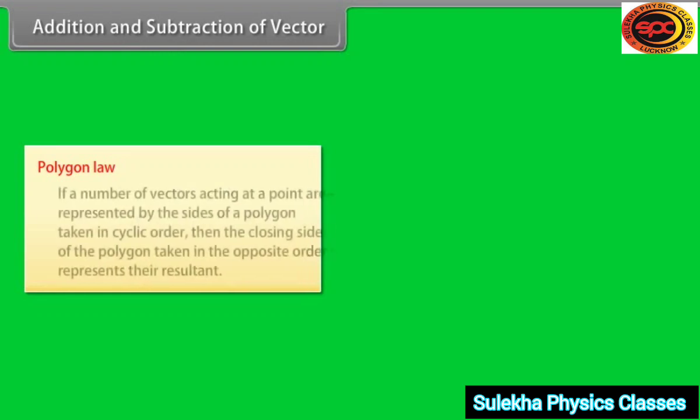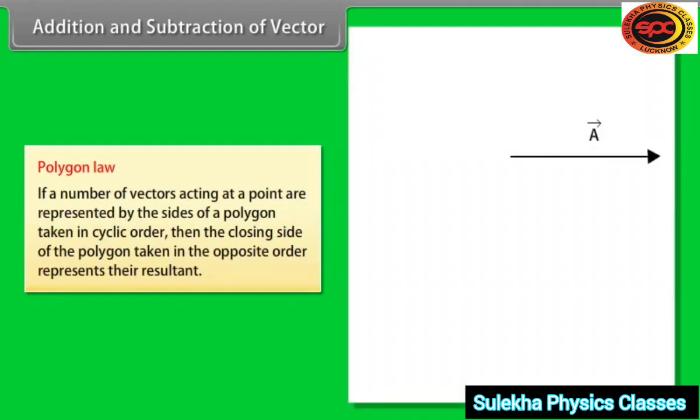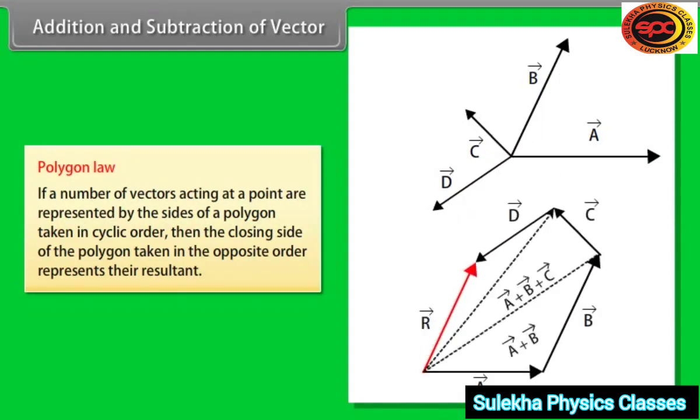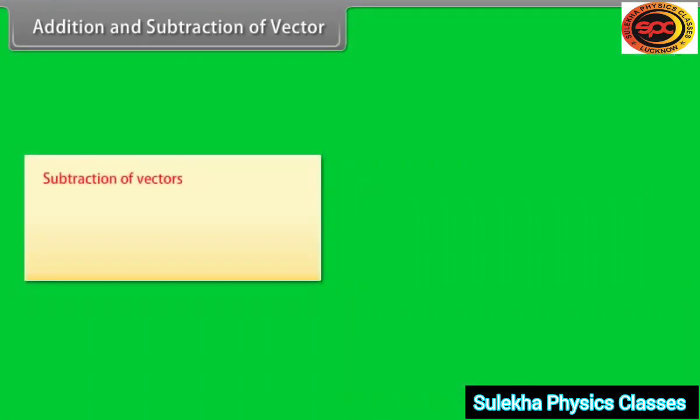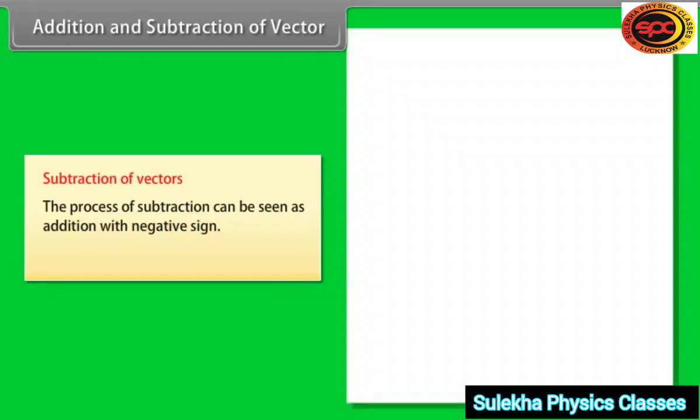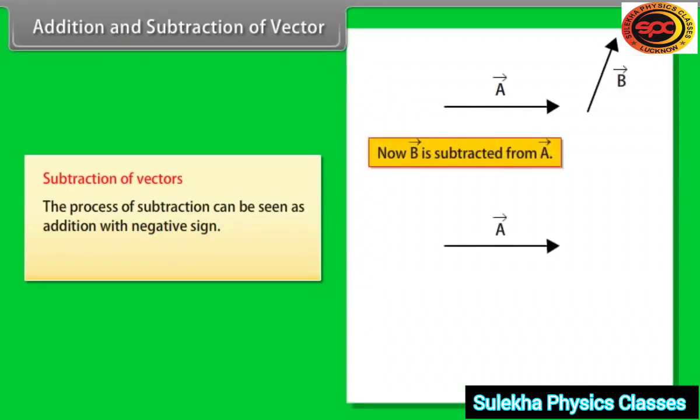C. Polygon law: if a number of vectors acting at a point are represented by the sides of a polygon taken in cyclic order, then the closing side of the polygon taken in the opposite order represents their resultant. Subtraction of vectors: the process of subtraction can be seen as addition with negative sign.